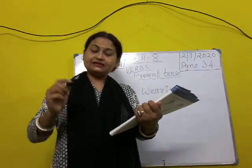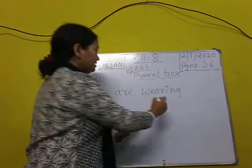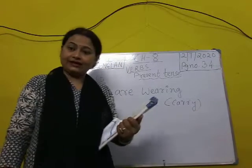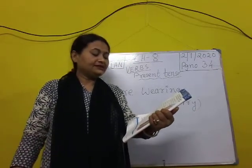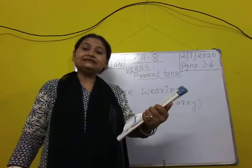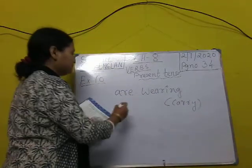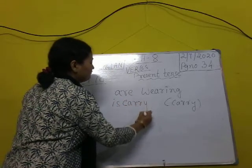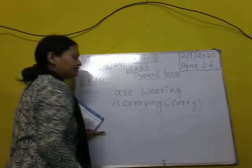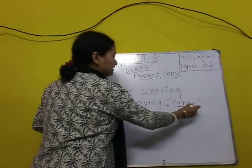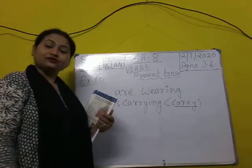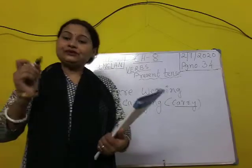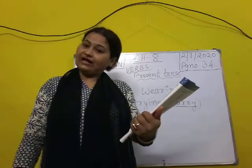My mother dash — the verb given in the bracket is 'carry', C-A-R-R-Y. So what we will write is: my mother is carrying — C-A-R-R-Y-I-N-G — some flowers. 'Carry' is the root word, so we write 'carrying'. My mother is carrying some flowers.